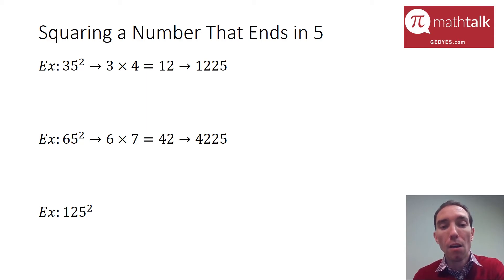The next example is a little bit larger of a number—it's 125. There's two digits before the 5 in this case; that number is 12. The rule still applies. I'm going to take 12, multiply it by itself plus 1, which is 13, and that is 156. Put a 25 at the end of that, I get 15,625. If you check in your calculator, 125 times 125, you'll get 15,625.